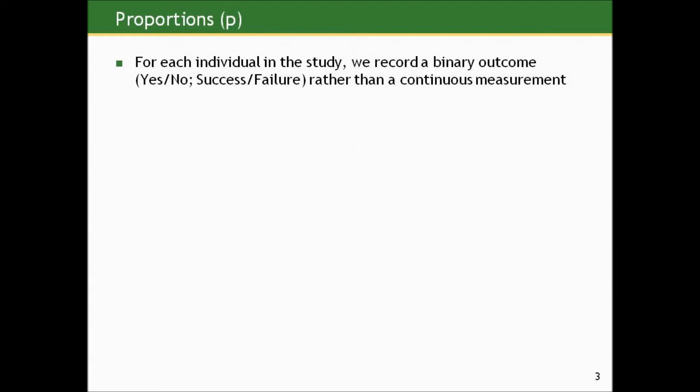Proportion is an appropriate summary measure that arises when our outcome of interest is binary. That is, for each individual in our study, we record a binary outcome — yes or no — rather than a continuous measurement.